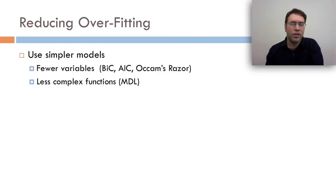To reduce overfitting, there's a few things you can do. You can use simpler models, for example, ones with fewer variables. BIC and AIC get to this as we talked about last week. This is kind of the idea of parsimony or Occam's razor. You can also use simpler models in terms of using less complex functions, which corresponds to minimum description length, which is something I'm not talking about in the rest of the class, but it's worth taking a look at. These are kind of the two big ways to get towards reducing overfitting.